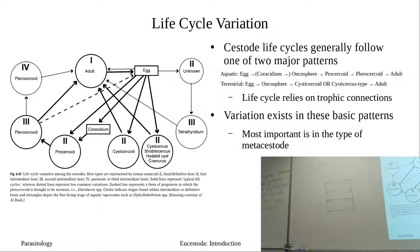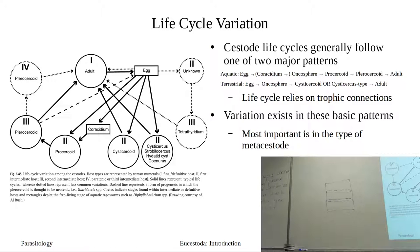The coracidium only appears in aquatic life cycles — it doesn't do you much good to be a ciliated stage on land. The terrestrial pattern has a cystocercoid or cysticercus-type larval stage, which are not necessarily solid — some qualify as bladder worms. The metacestode is the generic term for the larval stage between the oncosphere and the adult. That is where we see a lot of variation in these life cycles.